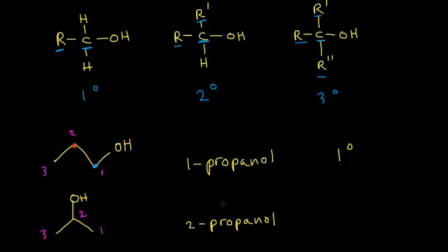How would you classify 2-propanol? We find the carbon attached to the OH — that carbon is attached to two other carbons, so this is a secondary alcohol. So we have an example of a primary alcohol and a secondary alcohol.